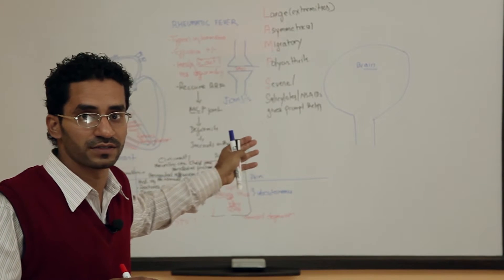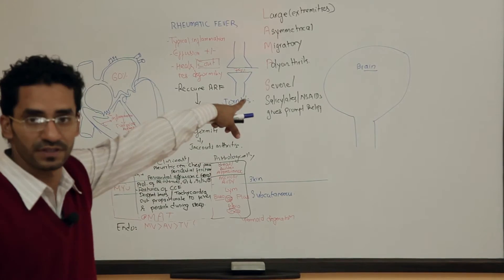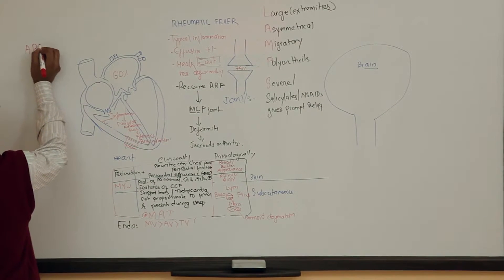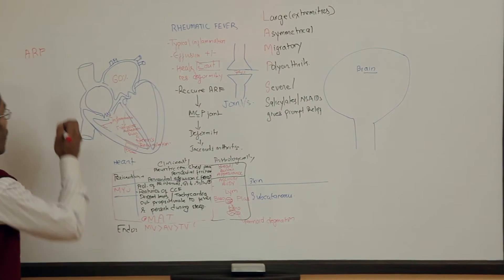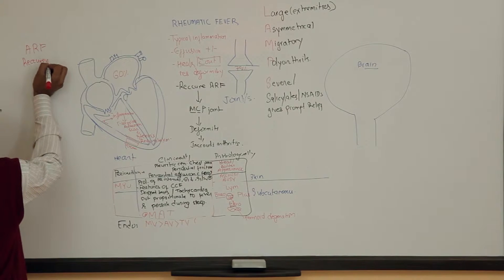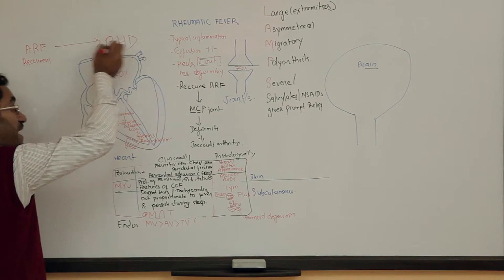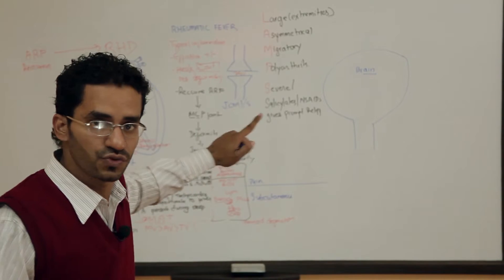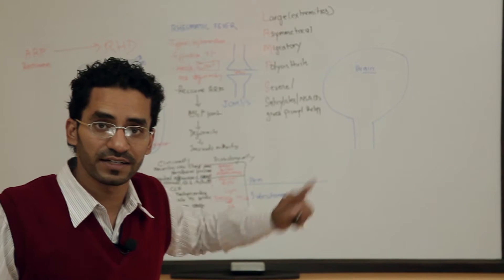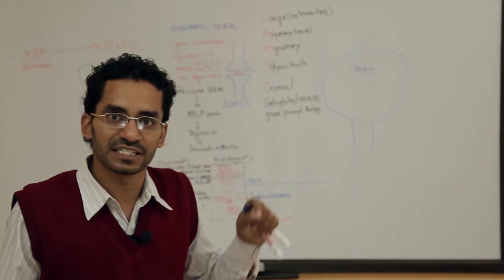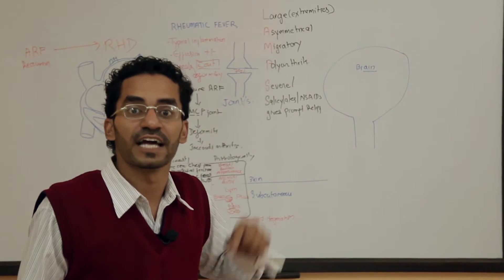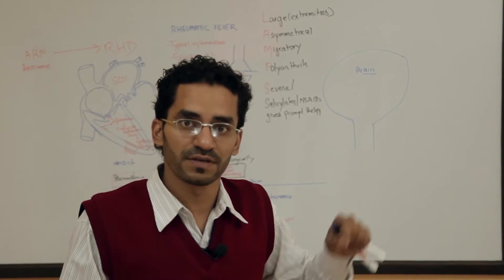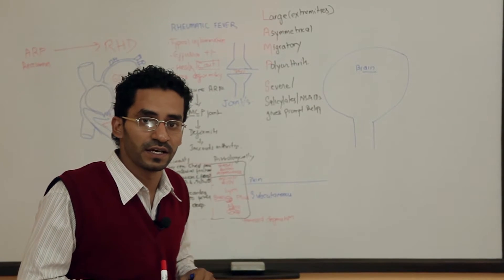In the endocardium there is involvement of the mitral valve followed by the aortic and tricuspid valves. Now, acute rheumatic fever which is recurrent leads to rheumatic heart disease. Rheumatic heart disease is the most common cause of childhood heart disease in developing countries.